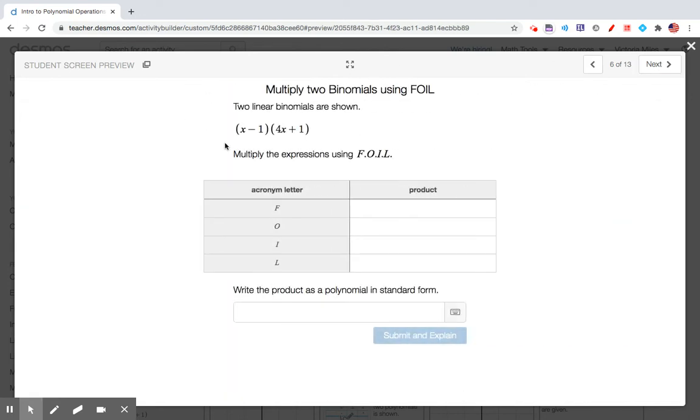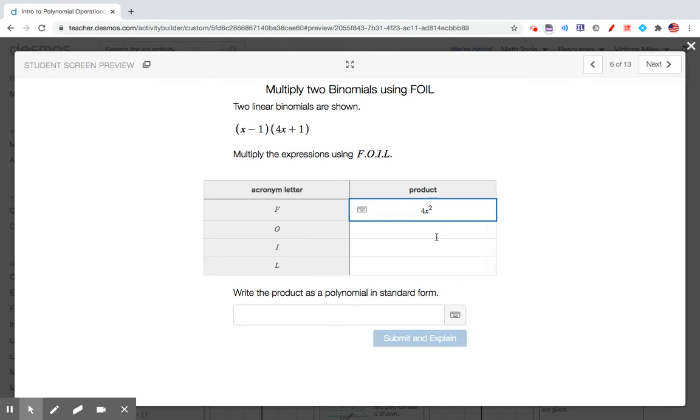Now multiply two linear binomials here using FOIL. The first two multiplied together: x times 4x is 4x squared. O is outside: x times 1. I is the inside. And L is the last. Now to write our product in standard form, we'll start with our quadratic term. Our linear terms are going to combine, and then our constant term.